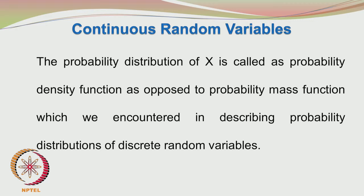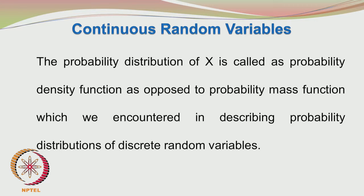One of the important properties of a random variable, whether it is continuous or discrete, is that it has a probability distribution function associated with it. The probability distribution function simply means the probability associated with the random variable taking on a particular value or falling within a range of values. In the case of continuous random variables, you talk of the random variable taking a certain range, and we will be discussing more on this shortly.